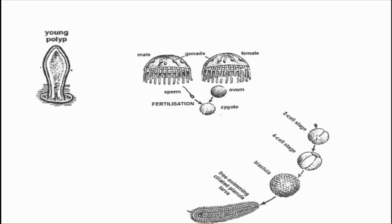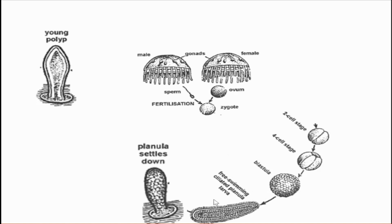The zygote then undergoes holoblastic cleavage to form the two-cell stage, four-cell stage, and then a multi-cell stage called blastula. Later it develops into a free-swimming ciliated larva called planula larva. After a period of free-swimming life, the planula gets attached to some substrate, settles down, and starts to become a young polyp. Buds start to develop from the young polyp's body and may become gastrozoids or blastostyles, forming a colony.